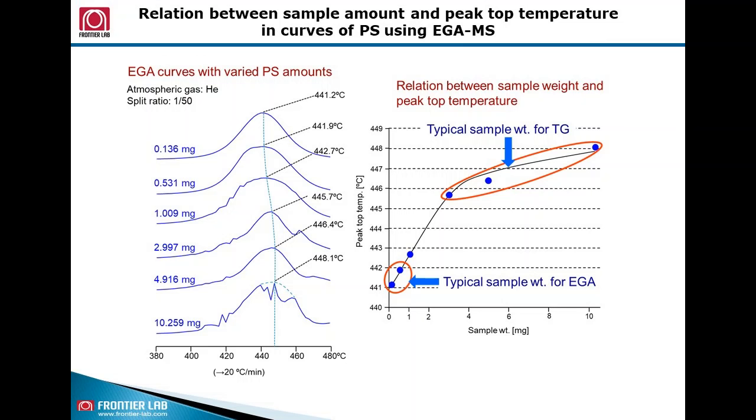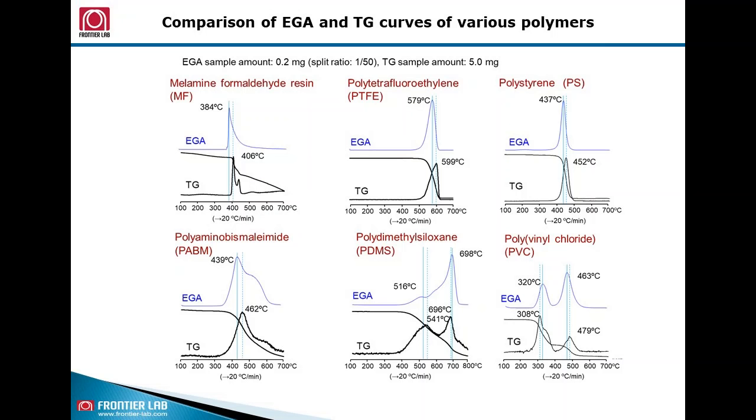To demonstrate the sample mass effect, we have investigated different masses of sample. From the results, it is evident there is a shift in apex temperature when sample mass is higher. We have obtained temperature profiles of 10 different polymers with both instruments.